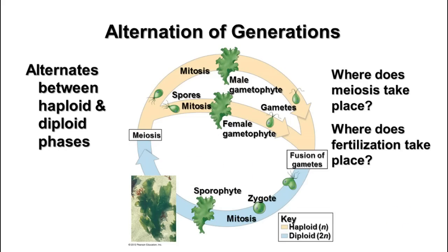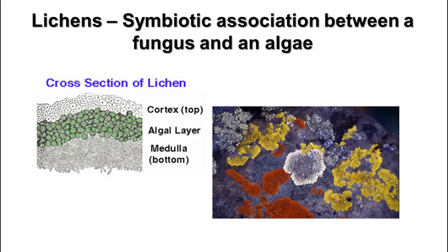This alternation of generations is a recurring pattern you'll see as we look at different organisms, kingdoms, and phyla. Lichens are a symbiotic association between a fungus and an algae, often seen growing on rocks or trees as pioneer organisms in areas with no soil. The fungus attaches to the surface and holds the algae; the algae collects sunlight and produces food for both—a well-defined mutualistic symbiotic relationship.